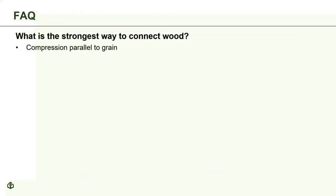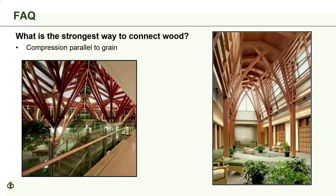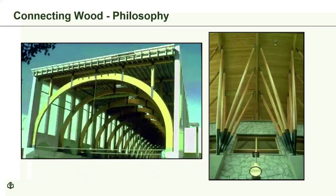Wood likes load applied as compression parallel to the grain — this is the strongest mode. Structural designs that capitalize on this idea are economical, attractive, and consistent with wood's heritage. Those fibers or grains are very strong in compression, which is why a tree can grow very tall and strong. Compression connections in wood are very easy to design. The picture shown is a great example: the fasteners are mainly holding the wood in place, while the natural fibers transfer most of the load into the base.